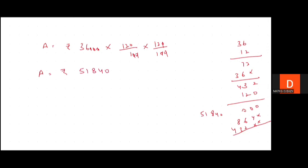So compound interest would be equal to amount minus principal. So compound interest would be rupees 51,840 minus 36,000. So compound interest would be coming out to be rupees 15,840. This is our answer.